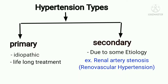Hello friends, today we are going to talk about renal vascular hypertension or renal artery stenosis. This is a form of secondary hypertension. Hypertension has two major types: primary hypertension and secondary hypertension.